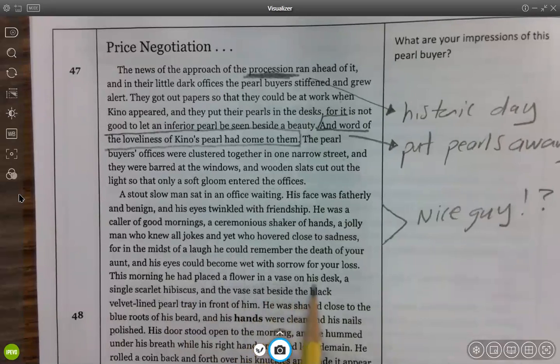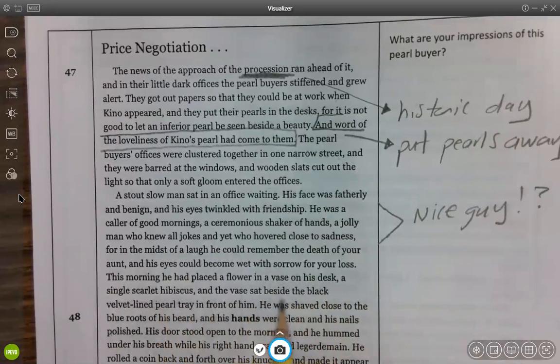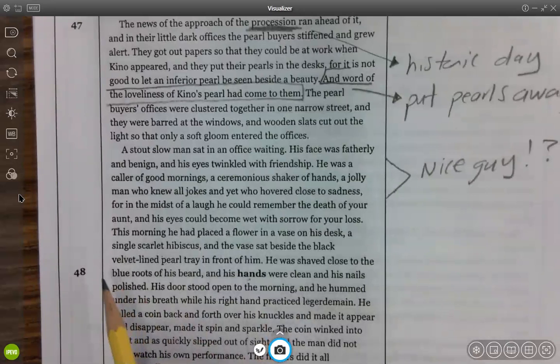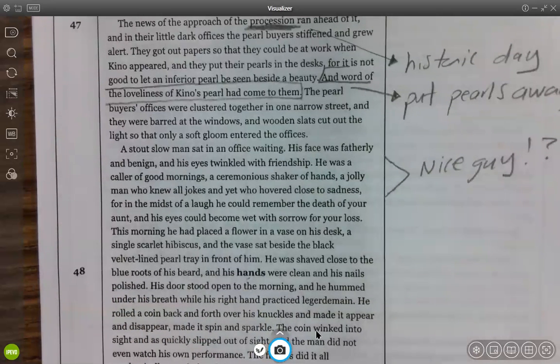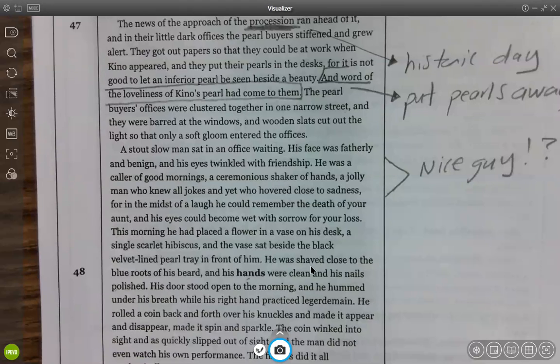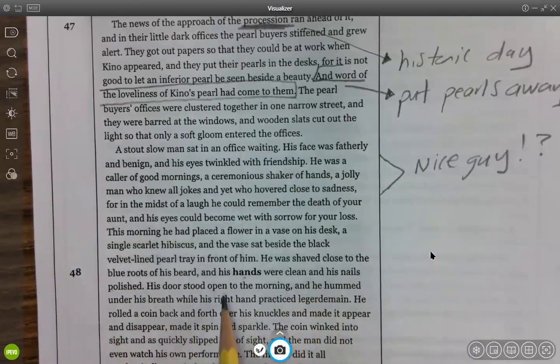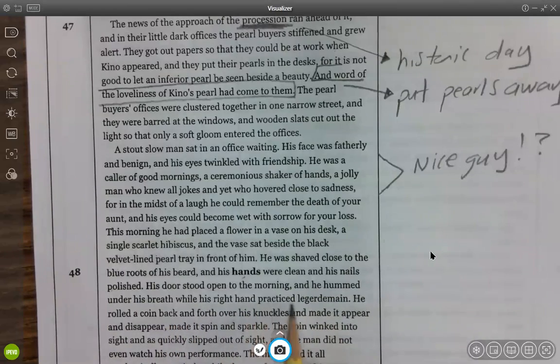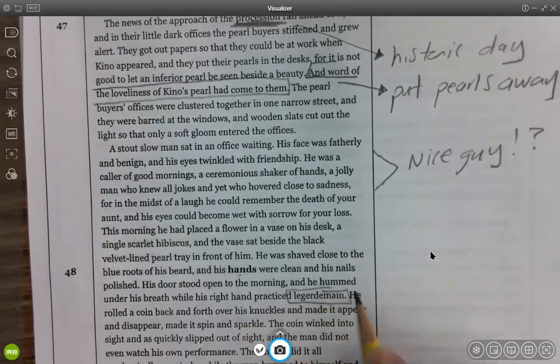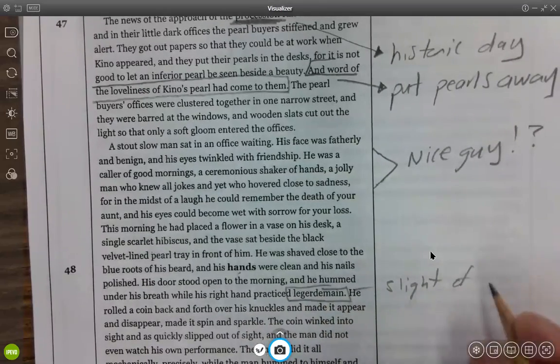This morning he had placed a flower in a vase on his desk, a single scarlet hibiscus, and the vase sat beside the black velvet-lined pearl tray in front of him. He was shaved close to the blue roots of his beard, and his hands were clean and his nails polished. This bold hands just means that it's the first word on page 48. His hands were clean and his nails polished. His door stood open to the morning, and he hummed under his breath while his right hand practiced ledger domain. I just remember that we, this was that idea of sleight of hand.